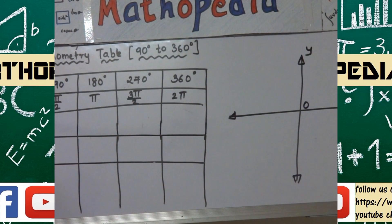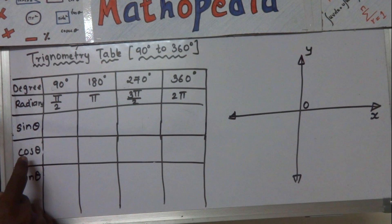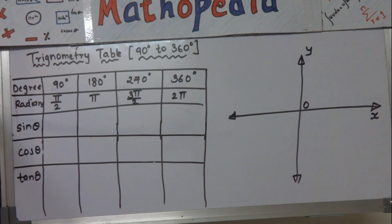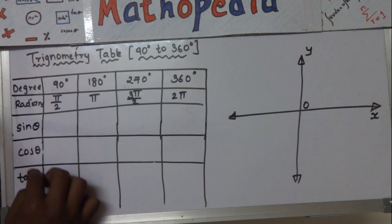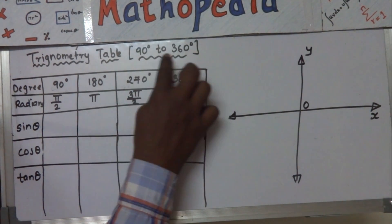Hello friends, in this video we are going to make the trigonometry table from 90 degrees to 360 degrees. We are going to see only the values of sine theta, cos theta, and tan theta. For the remaining three trigonometric ratios, we can find the reciprocal of these trigonometric ratios.